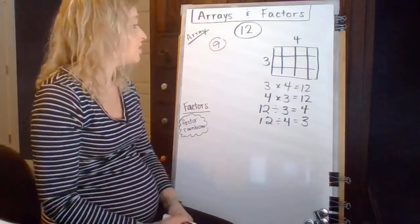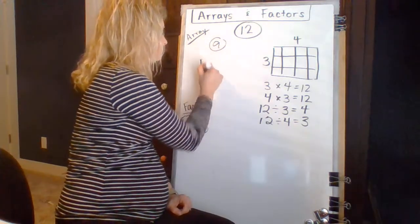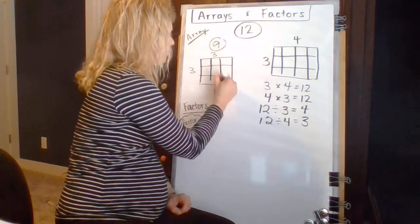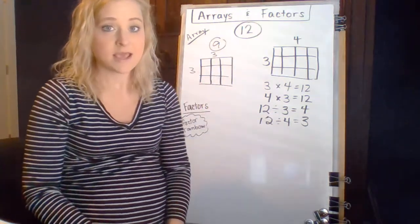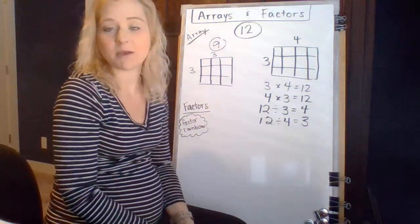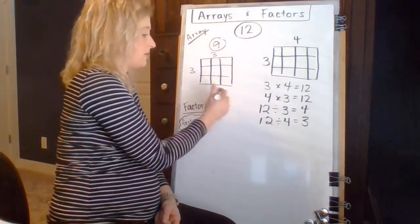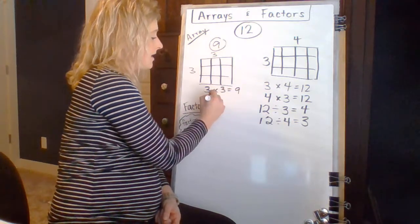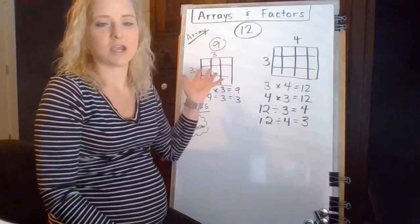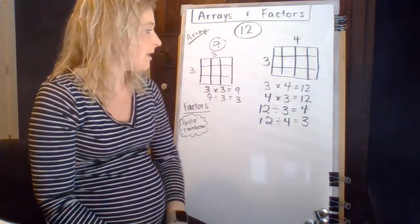Square numbers are when you have 9 as a square number, because if you multiply 3 times 3, if I make an array of 3 times 3, so 3 rows and 3 columns, I have the same number of rows and the same number of columns, and that makes a perfect square. Let's say each one of these is like 3 inches by 3 inches, and I make a perfect 3 inch by 3 inch square. This doesn't have as many equations that go along with it. It only has 2. 3 times 3 is 9, and 9 divided by 3 is 3. So square numbers, they only really have 2 equations that go with their array.